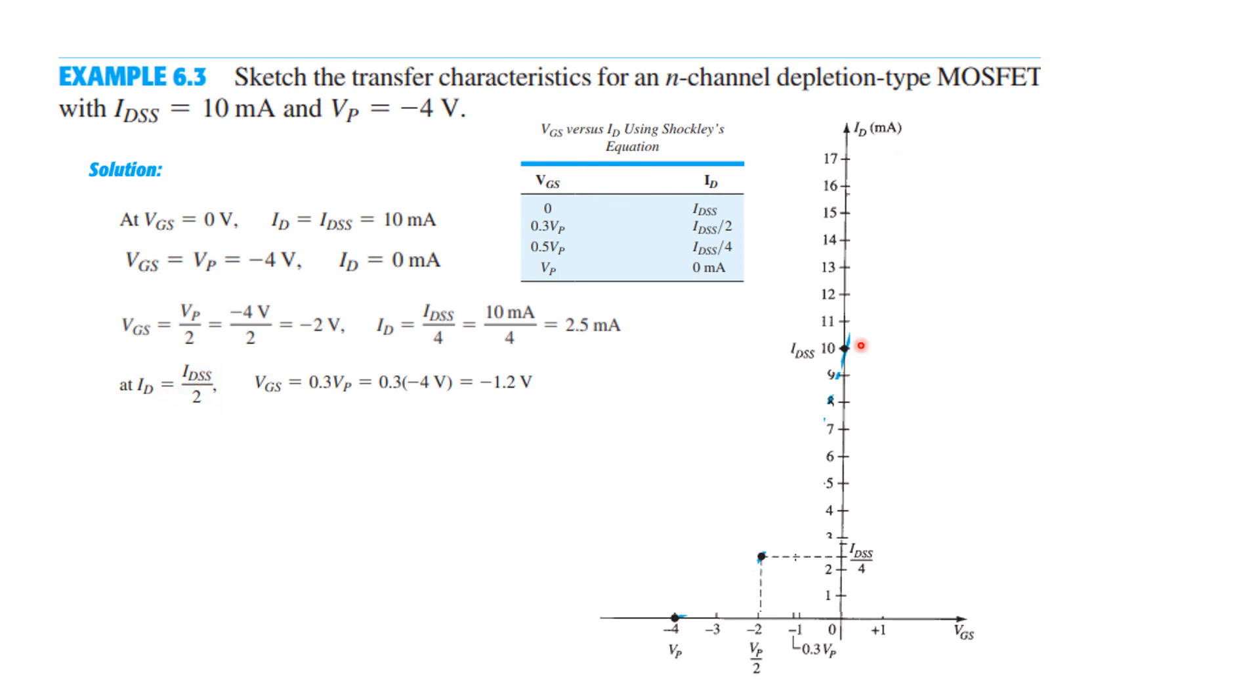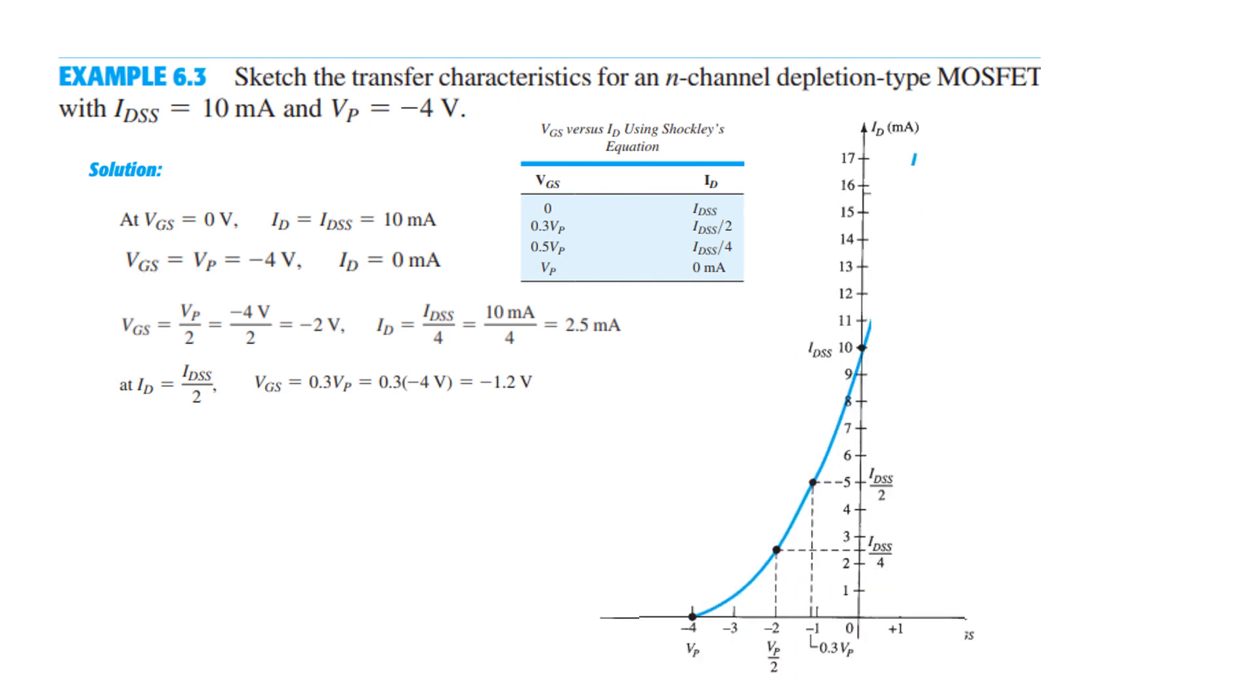And the fourth point is when ID is IDSS by 2, so half of IDSS that is 5. And then VGS will be 0.3VP which is minus 1.2. So these two points will be connected.